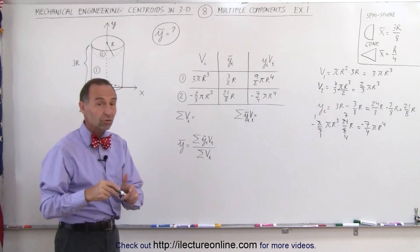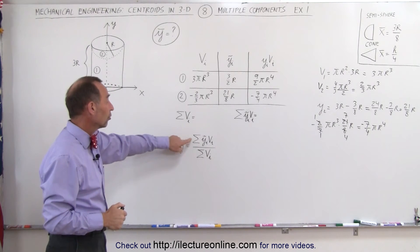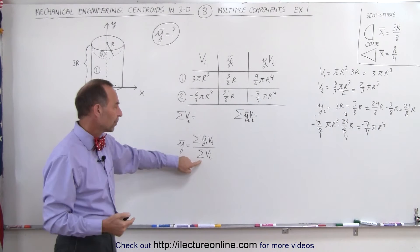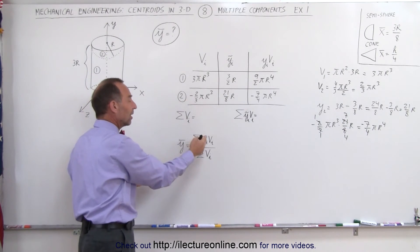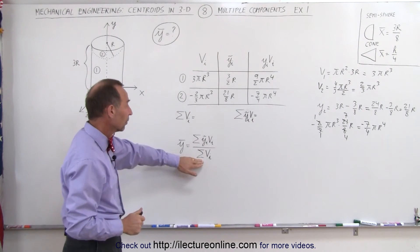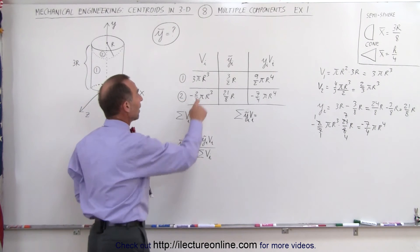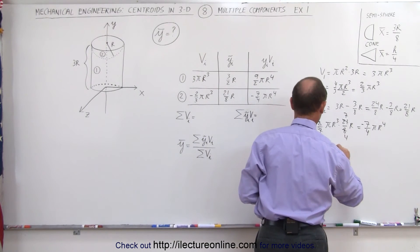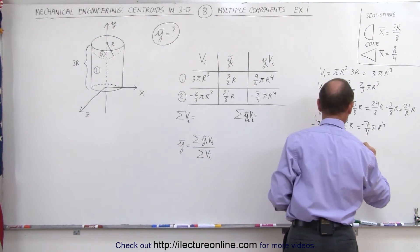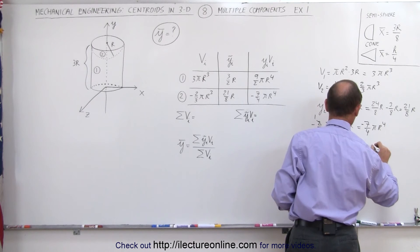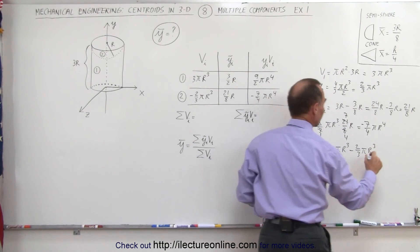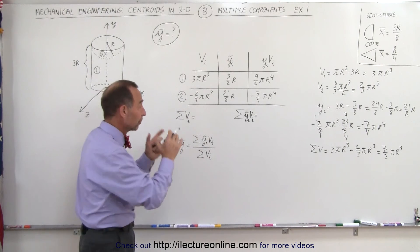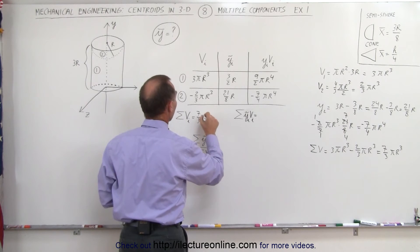Now, why did we do all that? It turns out that the centroid in the y direction is simply equal to the sum of all the volumes of all the objects times the centroid of each object, divided by the total sum of all the volumes. Whenever we have a missing piece, it becomes a negative volume, so instead of adding it, we subtract it. We have three pi r cubed minus two-thirds pi r cubed, which is nine-thirds minus two-thirds, giving us a net volume of seven-thirds pi r cubed.